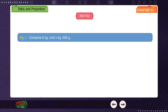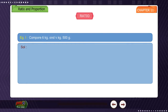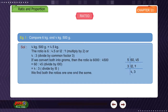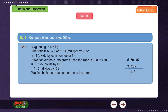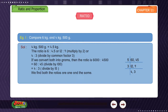Example 1: Compare 6 kilograms and 4 kilograms 500 grams. Solution: 4 kg 500 g is equal to 4.5 kg. The ratio is 6 is to 4.5, or 12 is to 9 (multiplied by 2), or 4 is to 3 (divided by common factor 3). If we convert both into grams, the ratio is 6000 is to 4500, which equals 60 is to 45, which equals 4 is to 3. Both methods give the same ratio.